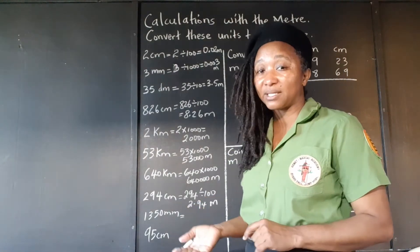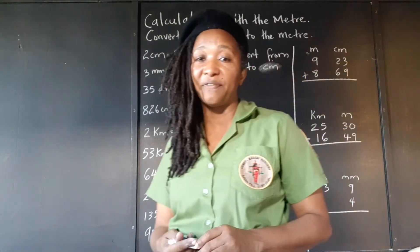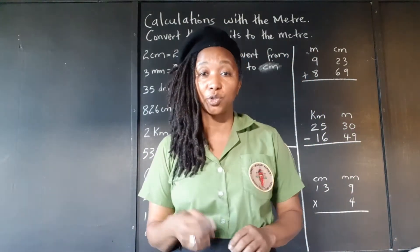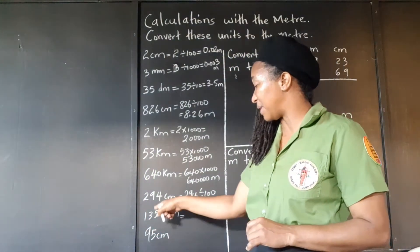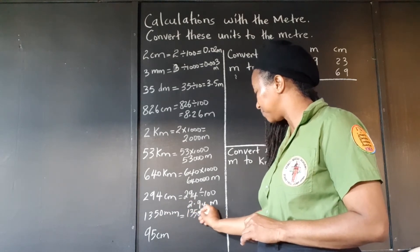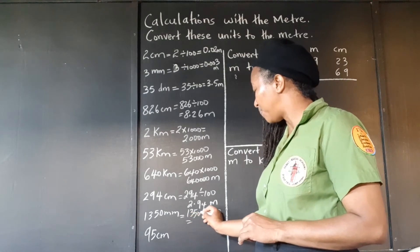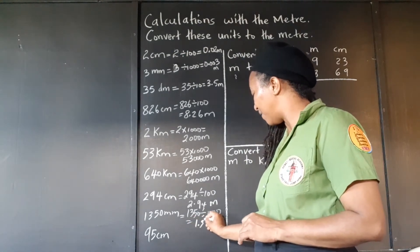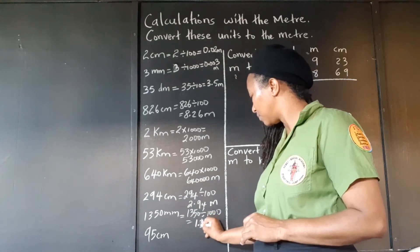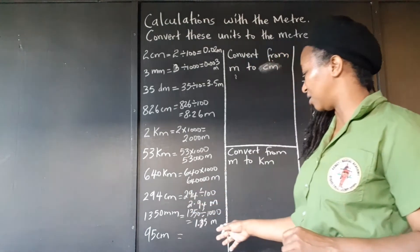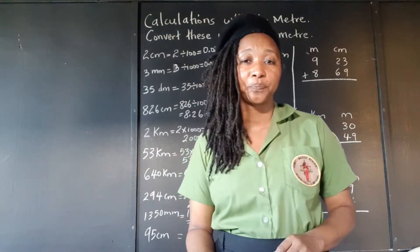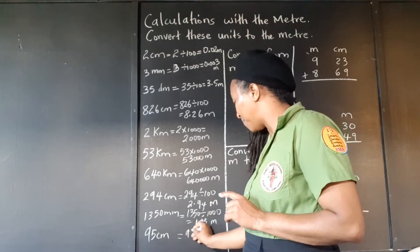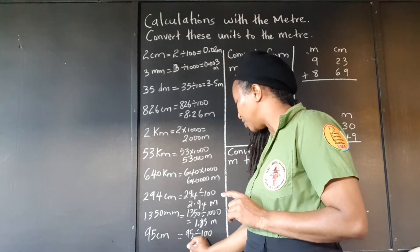1,350 millimeters to meters. The prefix 'milli' means 1,000, so 1,000 millimeters make 1 meter. We divide by 1,000 — moving three places back puts the decimal point between the 1 and the 3, giving 1.35 meters. And 95 centimeters to meters: 100 centimeters make 1 meter, so we divide by 100, giving 0.95 meters.